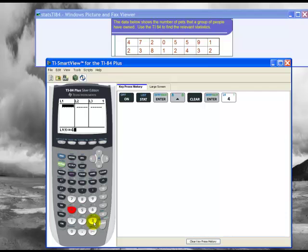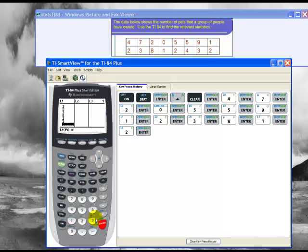So I have 4, enter, 7, enter, 2, enter, and so on. I continue entering all the data points from the table. And then finally 4, enter, 3, enter, 2, enter. And now I've entered all my numbers.